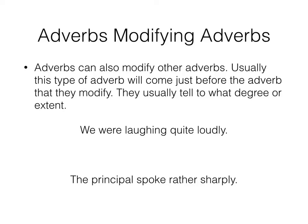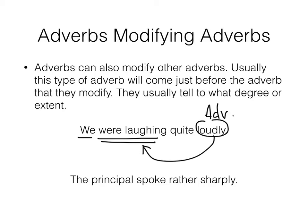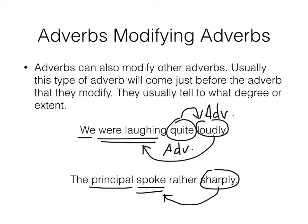Adverbs can also modify other adverbs. Usually they'll be right in front of one another, but not always. They often tell to what extent or degree. For example: 'We were laughing quite loudly.' Loudly describes were laughing, making it an adverb. Quite is telling to what extent — it was quite loudly — so quite is an adverb as well. 'The principal spoke rather sharply.' Sharply is an adverb. Rather is telling how sharply — to what extent was it sharp — so an adverb can only describe another adverb.